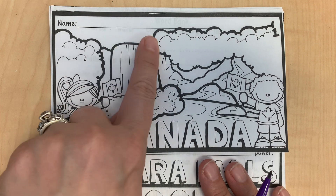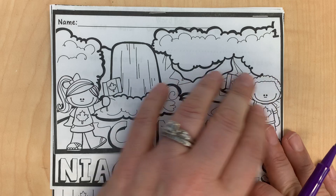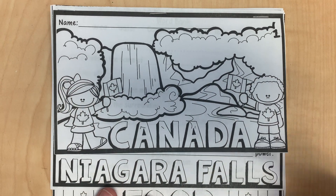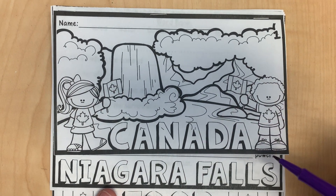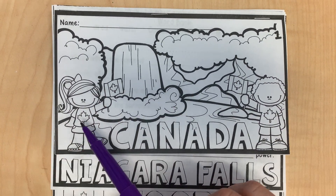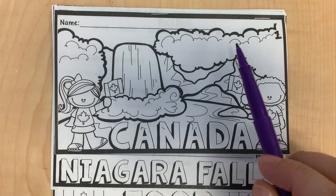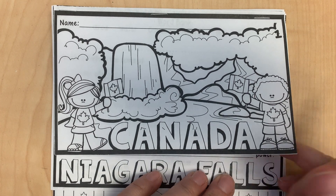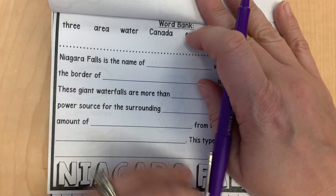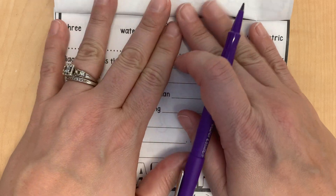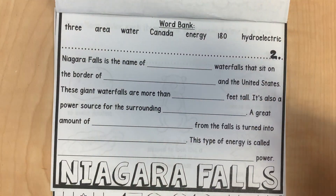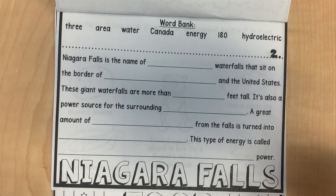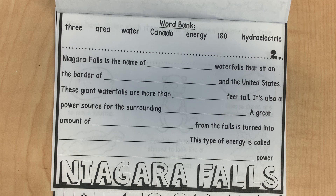Make sure your name is at the top in your neatest third grade writing. I do want this colored — it should look like Canada. So this is the falls, these are some kids. Make sure you color everything as neatly as you can. For today we're going to be talking about one of the most famous landmarks in Canada: Niagara Falls.